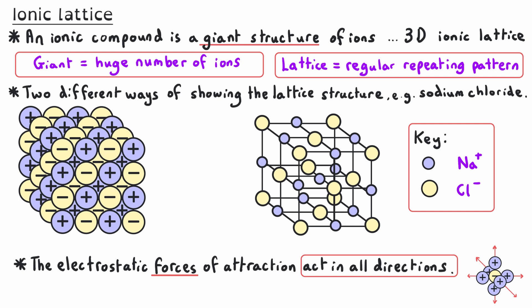The two different structures look similar — they both show different particles. What's different in the second one is that the charges aren't shown on the ions themselves, but there is a key showing that the blue ions are the positive sodium ions Na+, and the yellow circles represent the chloride ions Cl-. Both diagrams show the lattice structure of sodium chloride in slightly different ways. You need to be able to recognize diagrams like these as showing ionic compounds — the big clues are the positive and negative charges, either shown on the ions or in the key.